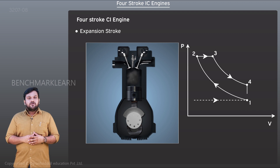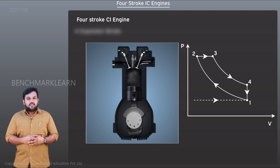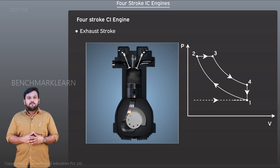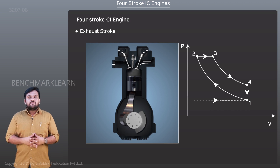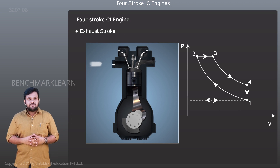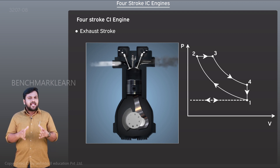Heat is released into the atmosphere during process four to one, which occurs when the piston is residing at the bottom dead center. During the exhaust stroke, the exhaust valve opens and the piston moves from the bottom dead center to the top dead center, pushing the gases outward.